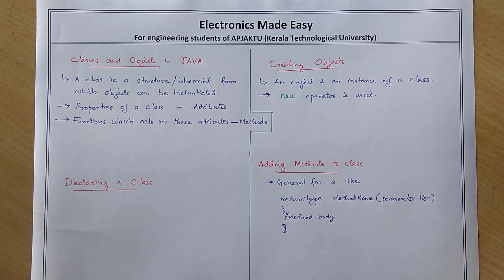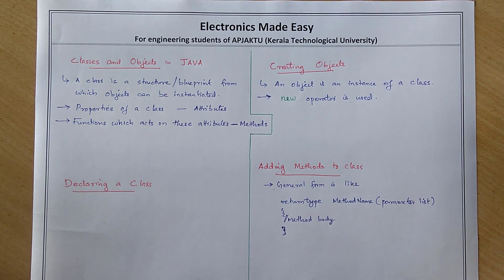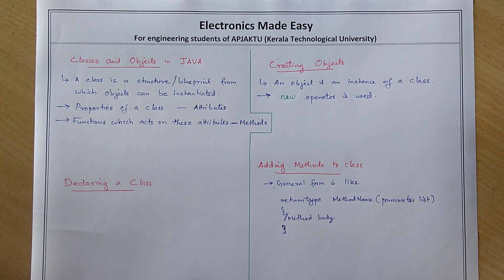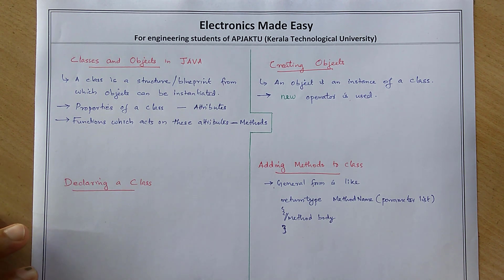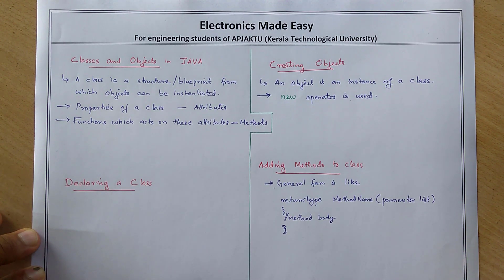Hi, this is Rishin from Electronics Made Easy. Today we are going to discuss about classes and objects in Java. Java is an object-oriented programming language, which means we can create real-time objects in Java. Java uses a class to create objects.